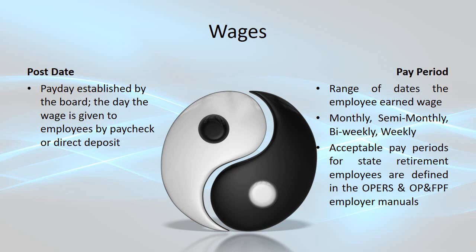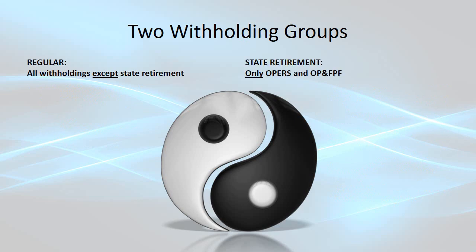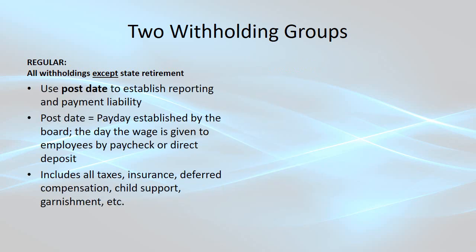Because withholding agencies do not use the same dates to establish reporting and payment liability, in UAN the payroll software withholdings are divided into two groups: regular and state retirement. Regular withholdings use the post date or payment date of a wage to establish liability. Remember, the post date is payday — established by your board, the day the wage is given to employees. Regular withholdings are absolutely everything except state retirement: all taxes, insurance, deferred compensation, child support, garnishment — anything but state retirement.